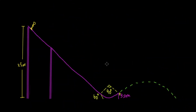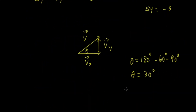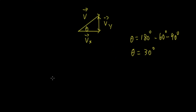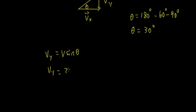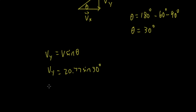With theta equal to 30 degrees, we calculate v_y using trigonometry: v_y = v × sin(theta). So v_y equals 20.77 × sin(30°), which gives v_y approximately equal to 10.39 meters per second.